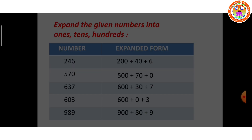Now we want to see the simplified form. When we add the expanded form, we get the simplified form. 300 plus 90 plus 8 — very good — is 398. 200 plus 50 plus 6 is 256. 900 plus 85 is 985. 500 plus 57 is 557.